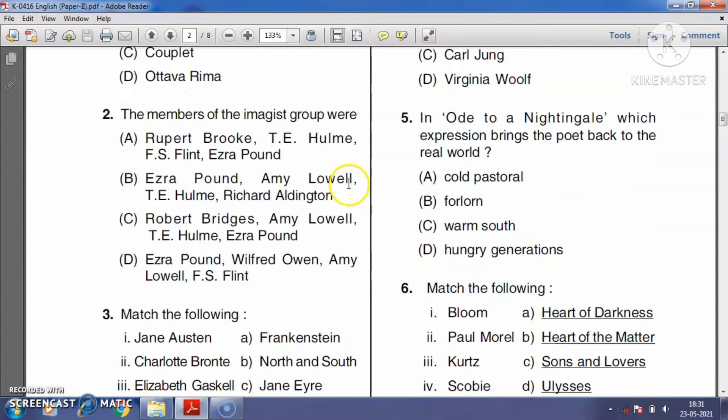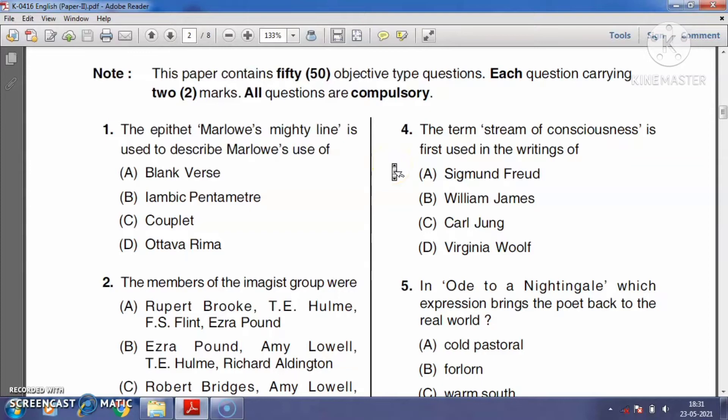Question number four: The term 'stream of consciousness' is first used in the writings of Sigmund Freud, William James, Carl Jung, or Virginia Woolf. Stream of consciousness is a term originated in the early 19th century. The term was first used by the psychologist William James in his book The Principles of Psychology, published in 1890, which describes the character's inner thoughts. So the right answer is option B, William James.